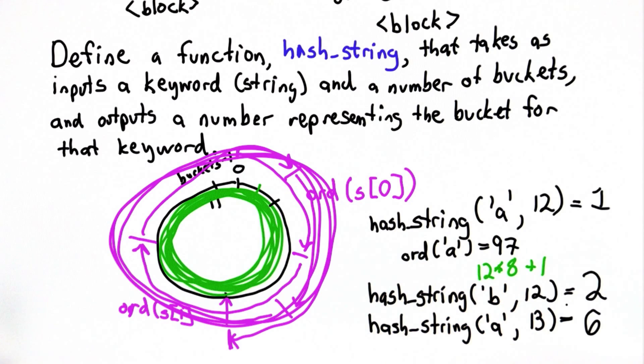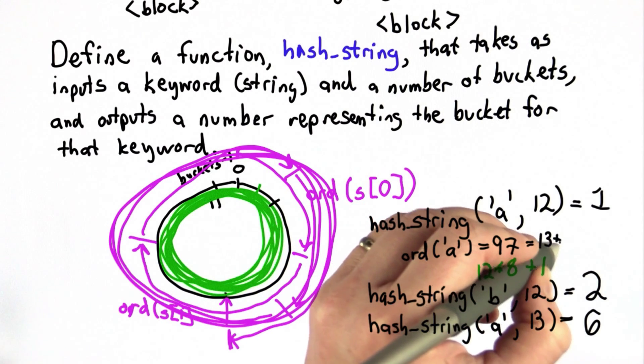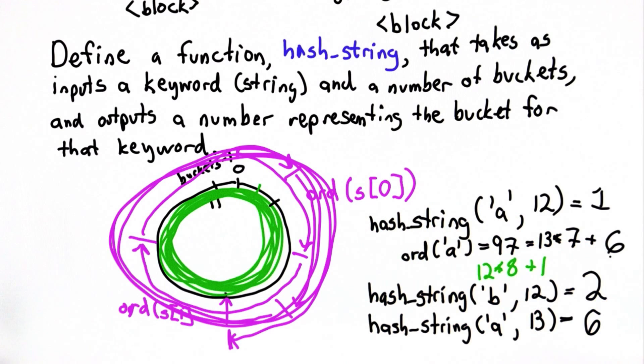The result there should end up being 6, and the reason it's 6 is because 97 is equal to 13 times 7 plus 6. So the size of the hash table matters, as well as the string.